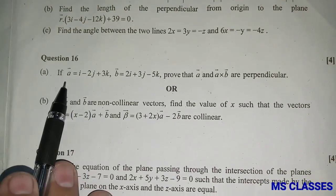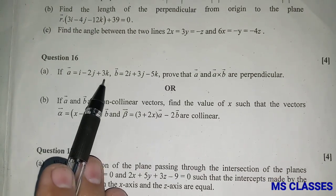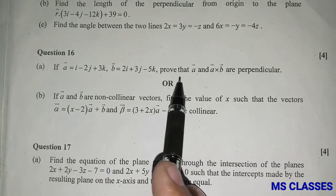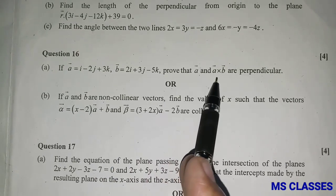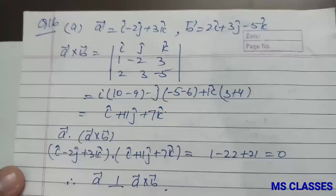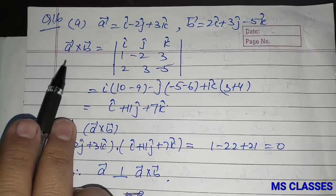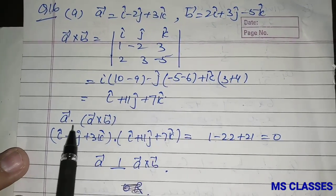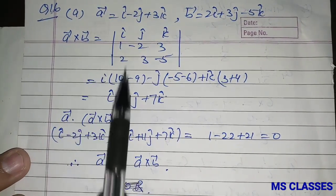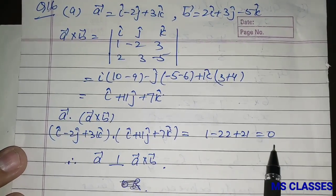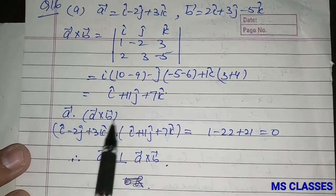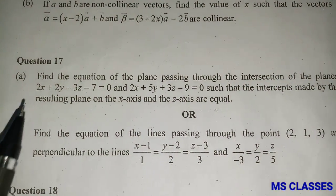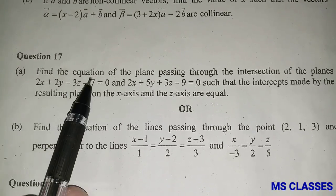If a⃗ = î - 2ĵ + 3k̂ and b⃗ = 2î + 3ĵ - 5k̂, prove that a⃗ and a⃗ × b⃗ are perpendicular. Using the determinant formula, find a⃗ × b⃗. Then compute a⃗ · (a⃗ × b⃗); we get 0, which proves that a⃗ and a⃗ × b⃗ are perpendicular.